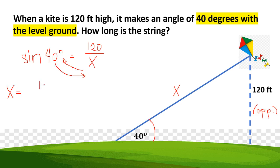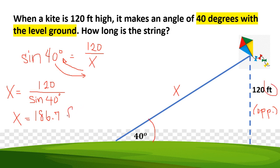So x equals 120 divided by sine 40 degrees. The answer is 186.7 feet. That's the length of the string — 186.7 feet.